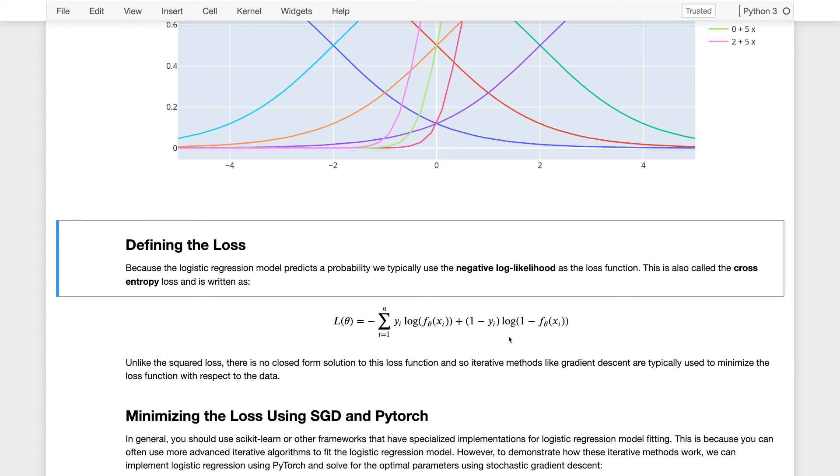They're written in the following way for the logistic regression model. This is the loss function, and now we would like to minimize this loss, and unfortunately, there isn't an analytic solution to minimizing this loss function. So instead, we have to turn to iterative methods. In the next video, I'll walk through how we minimize this using SGD and PyTorch, and in the subsequent video, I'll talk about how we minimize this loss using scikit-learn.